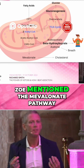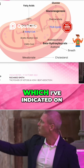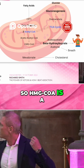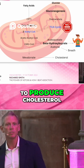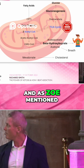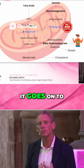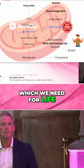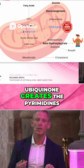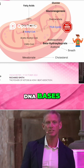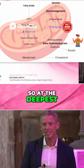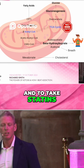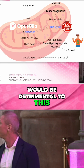Zoe mentioned the mevalonate pathway, which is indicated at the bottom. HMG-CoA is just before the mevalonate pathway, before we go on to produce cholesterol. As Zoe mentioned, cholesterol is essential — we need it. It goes on to create coenzyme Q10, or ubiquinone, which we need for life. In fact, ubiquinone creates the pyrimidines that build up the DNA bases. So at the deepest level within our chromosomes, we need these compounds, and to take statins would be detrimental to this.